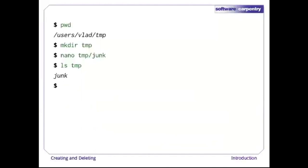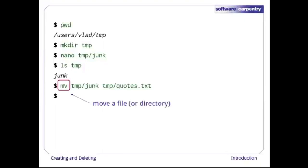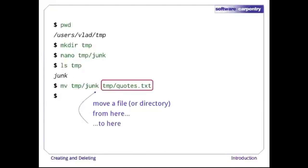Let's create that directory and file one more time. Junk isn't a particularly informative name, so let's change the file's name using mv. mv is short for move. We use it to move a file from one place to another. It also works on directories — there is no separate mvdir command. The first argument tells mv what we're moving; the second tells it where the thing we're moving is to go. In this case, we're moving temp/junk to temp/quotes.txt, which has the same effect as renaming the file.